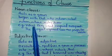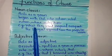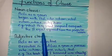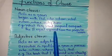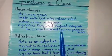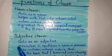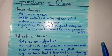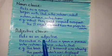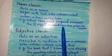For example: 'What they said surprised everyone.' Instead of writing a subject like 'he' or 'she,' we have written 'what they said,' so this becomes our noun clause. Another example: 'The IT expert explained how the project works.' Here, 'how the project works' is our noun clause, functioning as the object of the sentence.